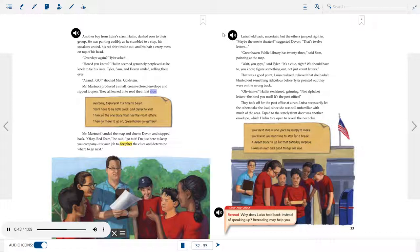Another boy from Louisa's class, Halen, dashed over to their group. He was panting audibly as he stumbled to a stop, his sneakers untied, his red shirt inside out, and his hair a crazy mess on top of his head. Overslept again? Tyler asked. How'd you know? Halen seemed genuinely perplexed as he knelt to tie his laces. Tyler, Sam, and Devon smiled, rolling their eyes. And go! shouted Mrs. Goldstein. Mr. Martucci produced a small cream-colored envelope and ripped it open. They all leaned in to read their first clue. Welcome, explorers. It's time to begin. You'll have to be both quick and clever to win. Think of the one place that has the most letters. Then go there to go on, Greenhaven go-getters. Mr. Martucci handed the map and clue to Devon and stepped back. Okay, Red Team, he said. Go to it. I'm just here to keep you company. It's your job to decipher the clues and determine where to go next. Louisa held back, uncertain, but the others jumped right in.